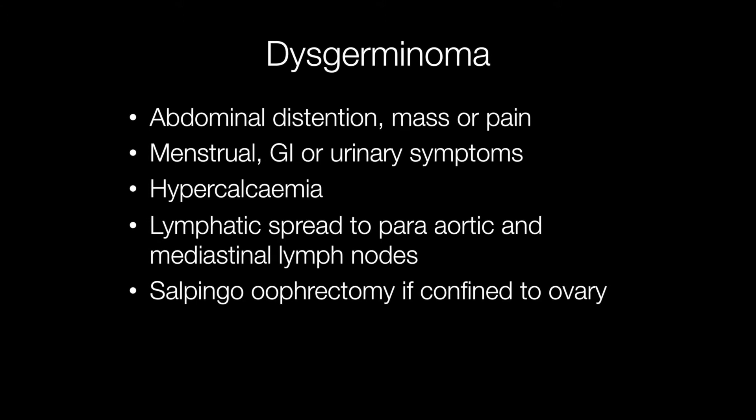When dysgerminomas metastasise they spread via the lymphatic system to the para-aortic and mediastinal lymph nodes. The usual treatment for dysgerminomas is salpingo-oophorectomy if the tumour is confined to the ovary.